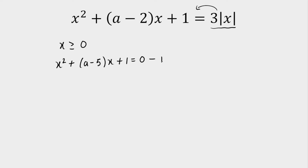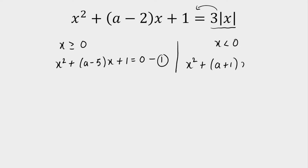This is the first quadratic. One more quadratic we get for X less than 0. For X less than 0, mod of X opens with a negative sign and the remaining quadratic will be X squared plus (A plus 1) times X plus 1 is equal to 0. This is the second quadratic equation.